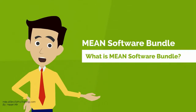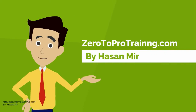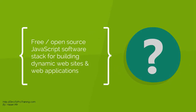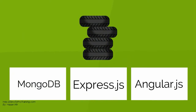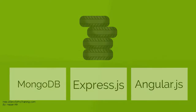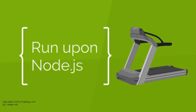In this video, we will talk about MEAN Software Bundle, presented by Zerotoprotraining.com. It is a free and open-source JavaScript software stack for building dynamic websites and web applications. MEAN is a combination of MongoDB, Express.js, and Angular.js, all of which run upon Node.js.